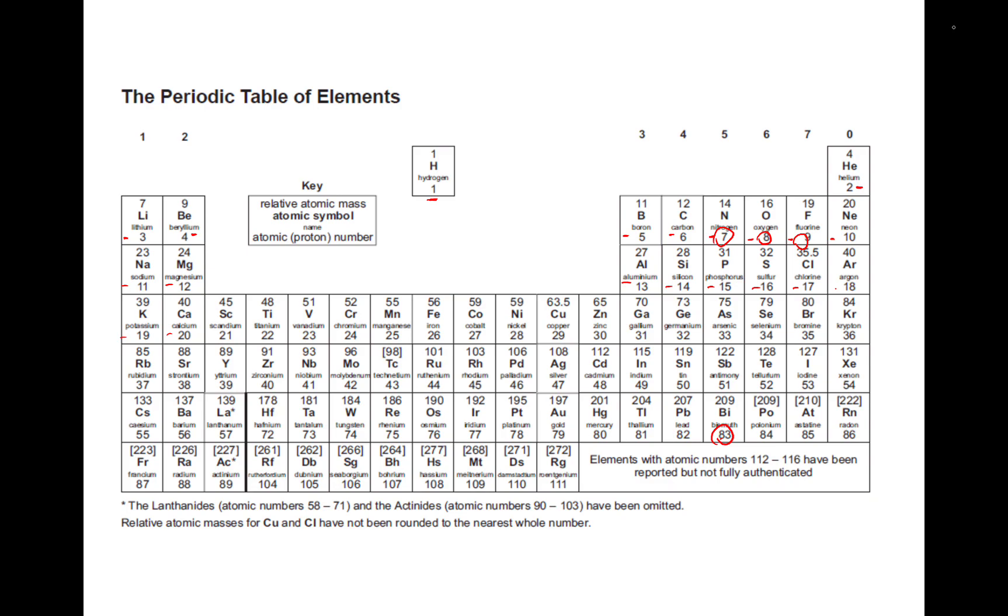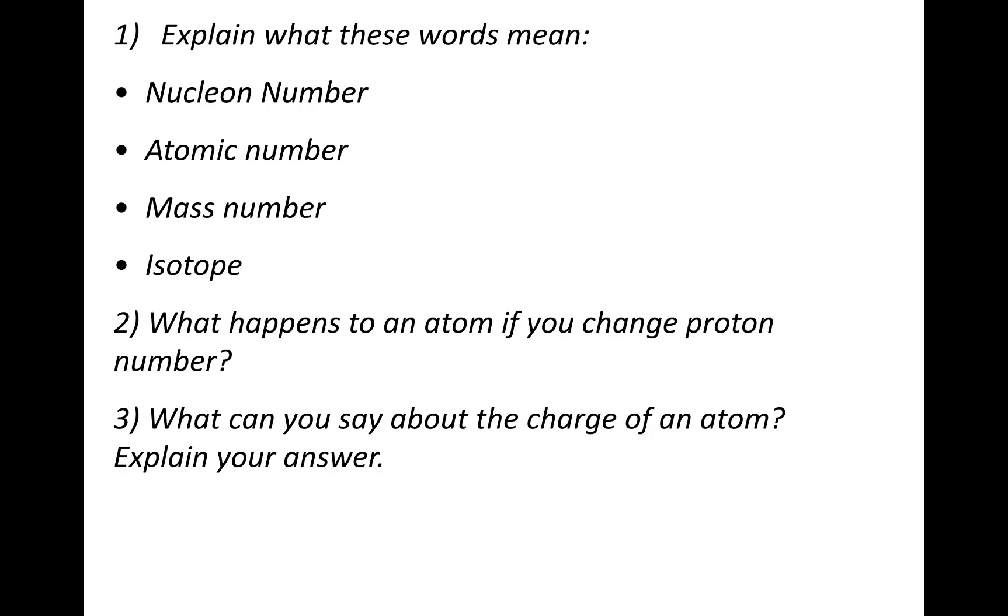Let's do some questions. Pause and have a go at these. So explain what these words mean. Nuclear number. Actually, I've not even told you what nuclear number is. Nuclear number is just another name for mass number. It's the total number of protons and neutrons. Atomic number. I actually did tell you what this one was. Atomic number is the total number of protons.